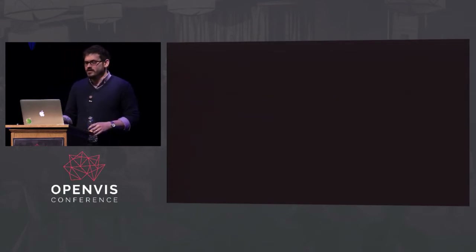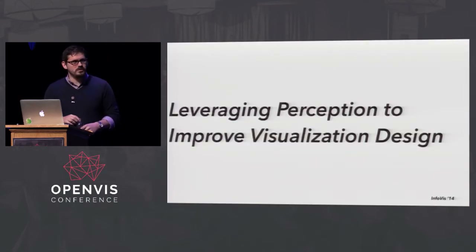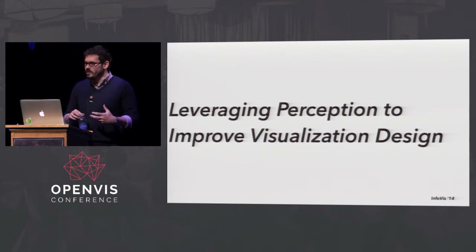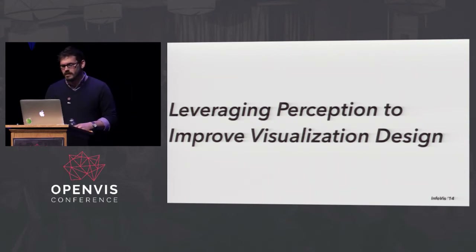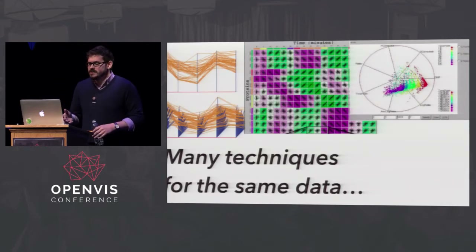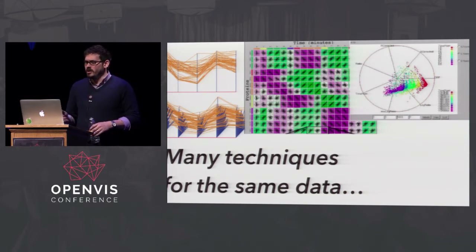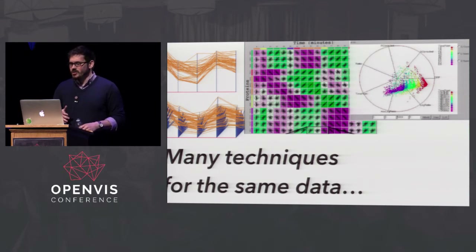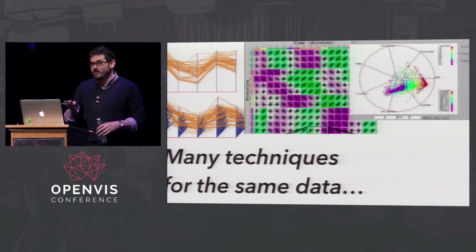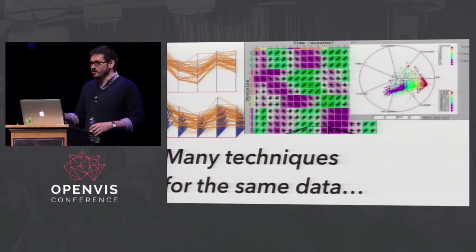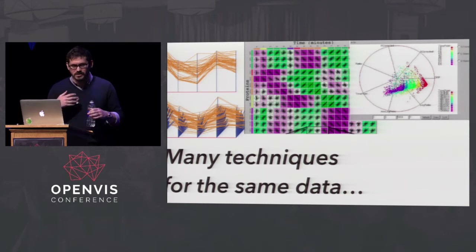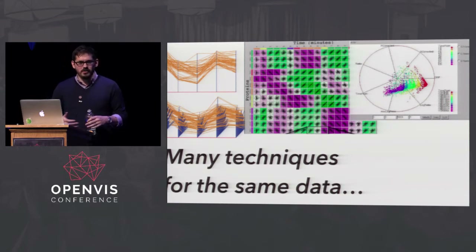One of those questions is how to leverage the human ability of perception to improve visualization design. The problem looks like this: we have many techniques that work for the exact same data. A parallel coordinates plot is sort of an isomorph of the scatter plot matrix, which is itself an isomorph of a radial scatter plot. These can all show the exact same data, but they're quite different. What are the trade-offs between them?